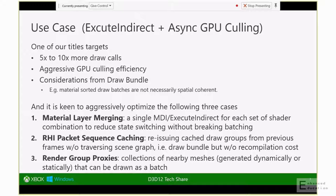These three major use patterns have heavily driven the early conversations about API design. There are two major areas we focused on: the first is how to effectively achieve these use patterns — especially material layer merging — by combining Execute Indirect with dynamic indexing of the descriptor table in HLSL 5.1. The second is how to provide a much more aggressive GPU culling efficiency, and as a first step we addressed the culling efficiency.